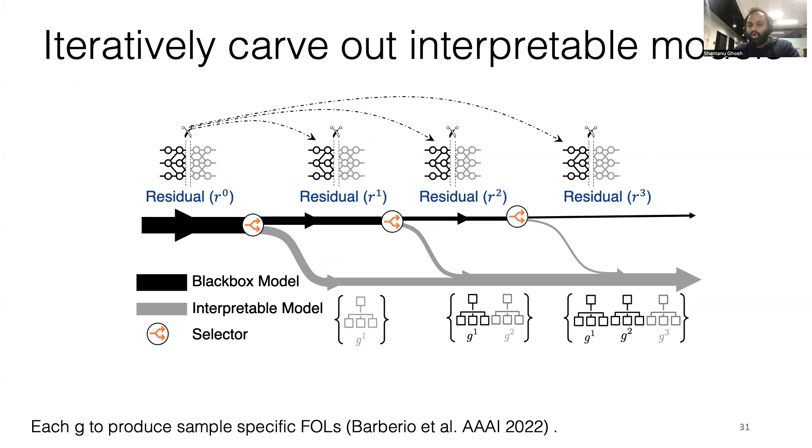After training, all the interpretable models cover the majority of the samples cumulatively. We call them as the mixture of interpretable experts. Each expert produces sample-specific first-order logic expression to explain the prediction. Throughout the process, the encoder phi remains fixed.